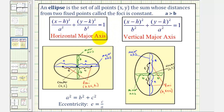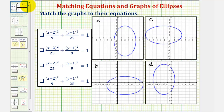This should be enough information for us to match the graph to the correct equation. Let's find the center of each ellipse and then determine whether it has a horizontal or vertical major axis. Looking at this first ellipse, the center would be this point here, where the coordinates are two comma negative one, and this ellipse has a vertical major axis.